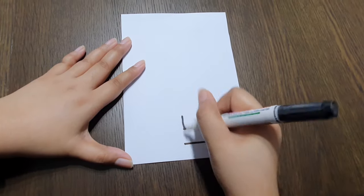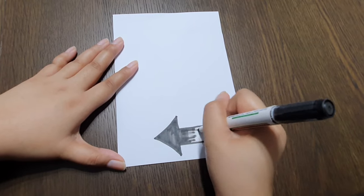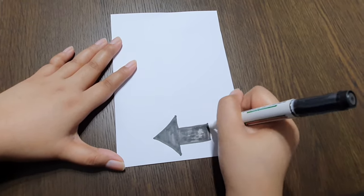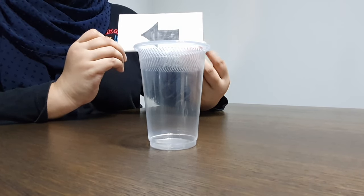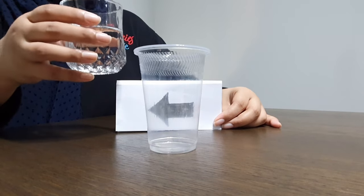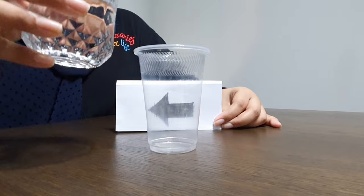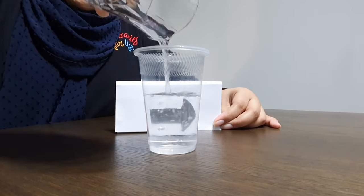First, on a piece of paper, use the marker to draw an arrow pointing left. Next, place the piece of paper you just drew on behind the clear glass. Now, slowly pour the cup of water into the clear glass. Watch as the direction of the arrow changes from left to right.